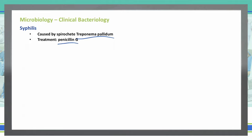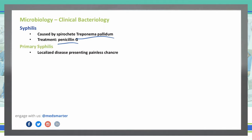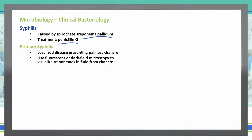Primary syphilis is the initial infection where it's localized at the very location it entered the body. It's going to have a painless chancre at that localized point. We can see the syphilis bacteria using a fluorescent or dark-field microscope to actually see those treponemes in that chancre. A lot of times people might ignore it because it's painless, but it is typically present on the genitals.